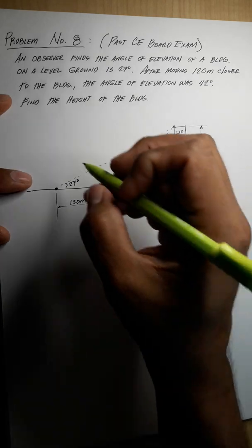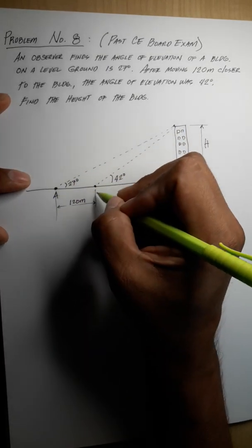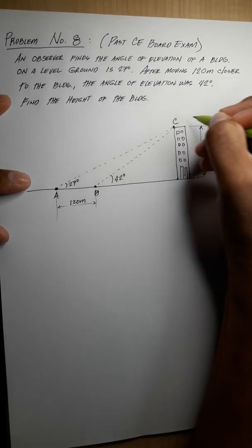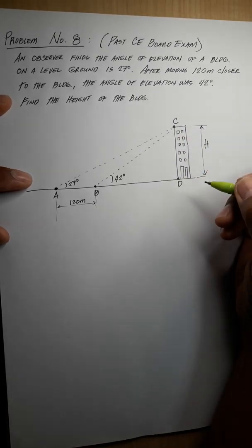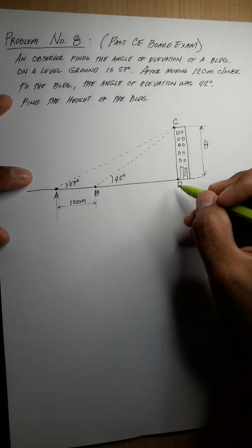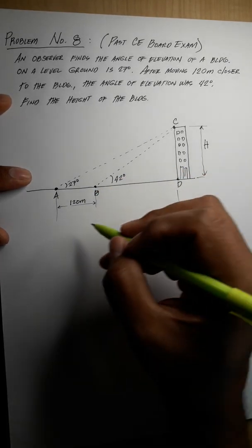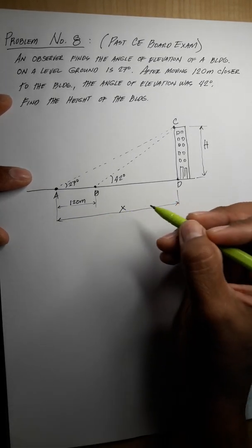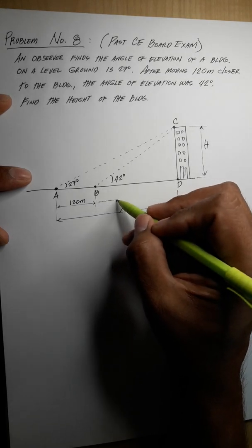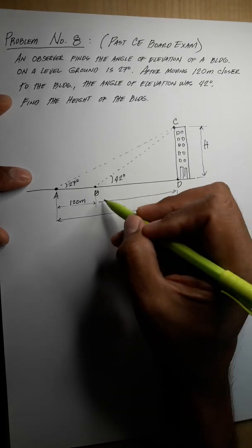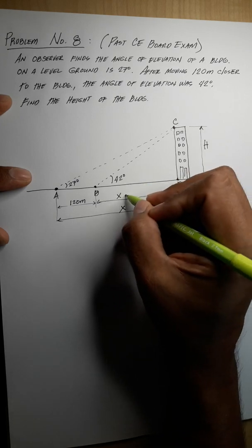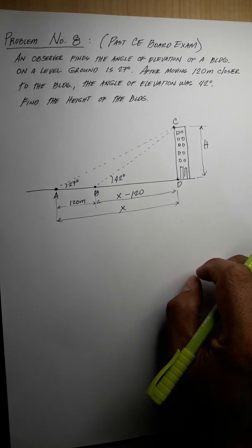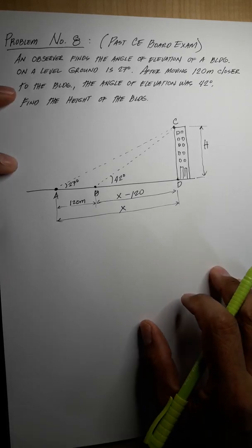I call the initial observer position point A, the second position point B, the base of the building point C, and the top of the building point D. The distance from A to D (the base) is called x, so the distance BD becomes x minus 120. Now we're ready to solve the problem.